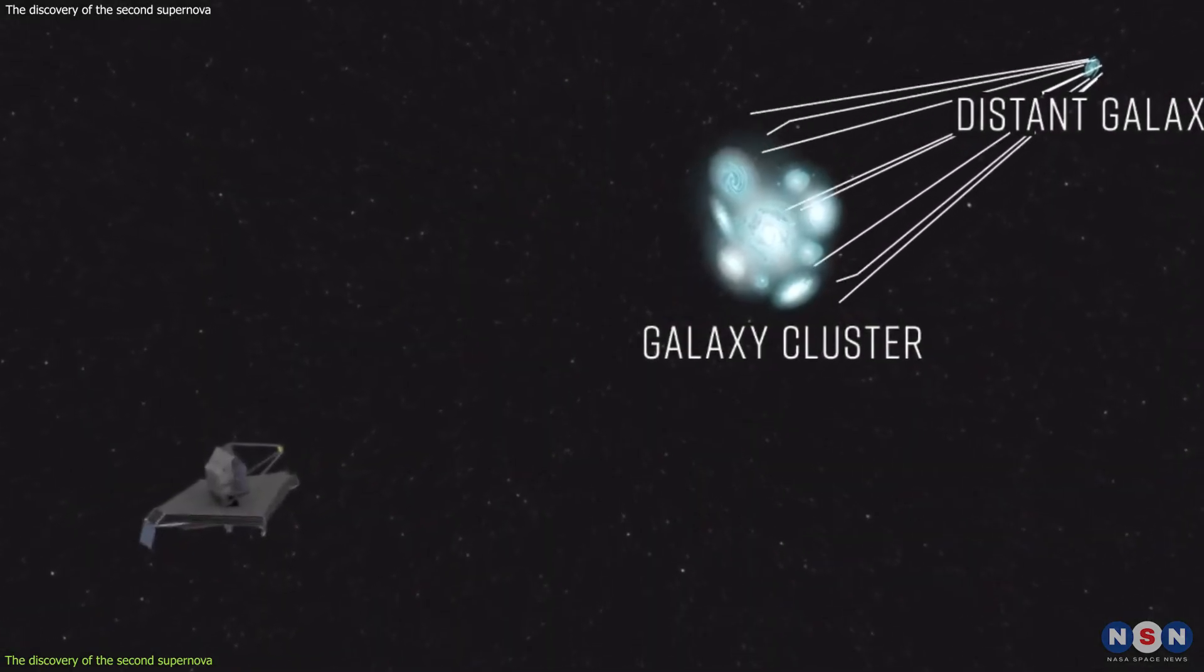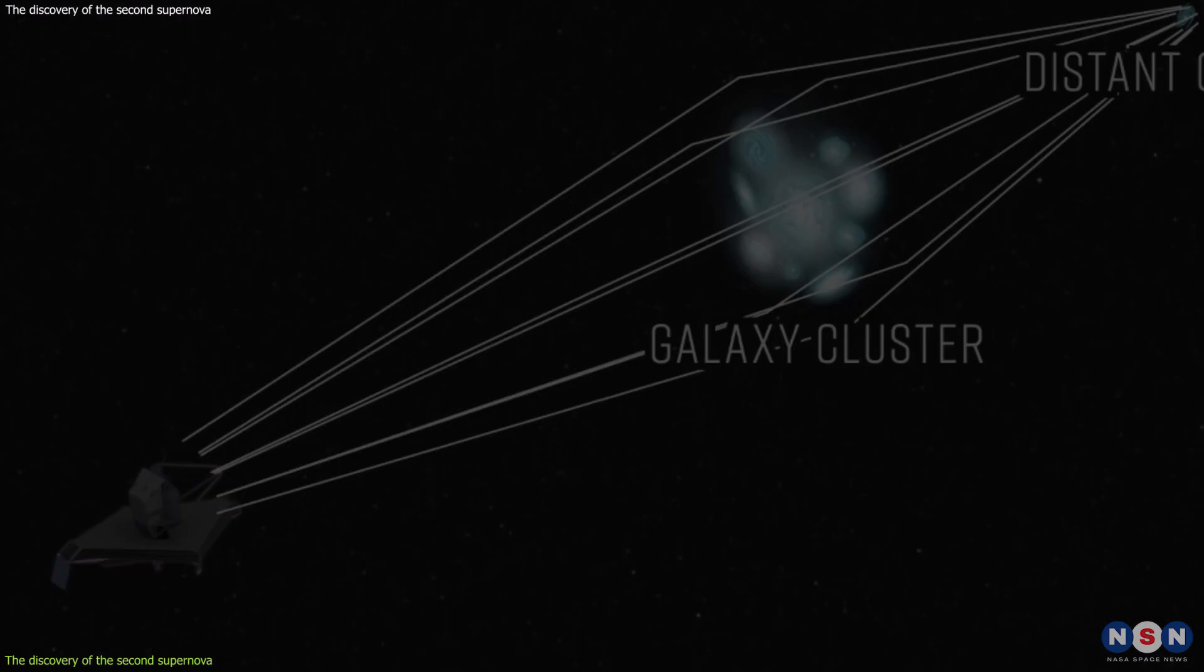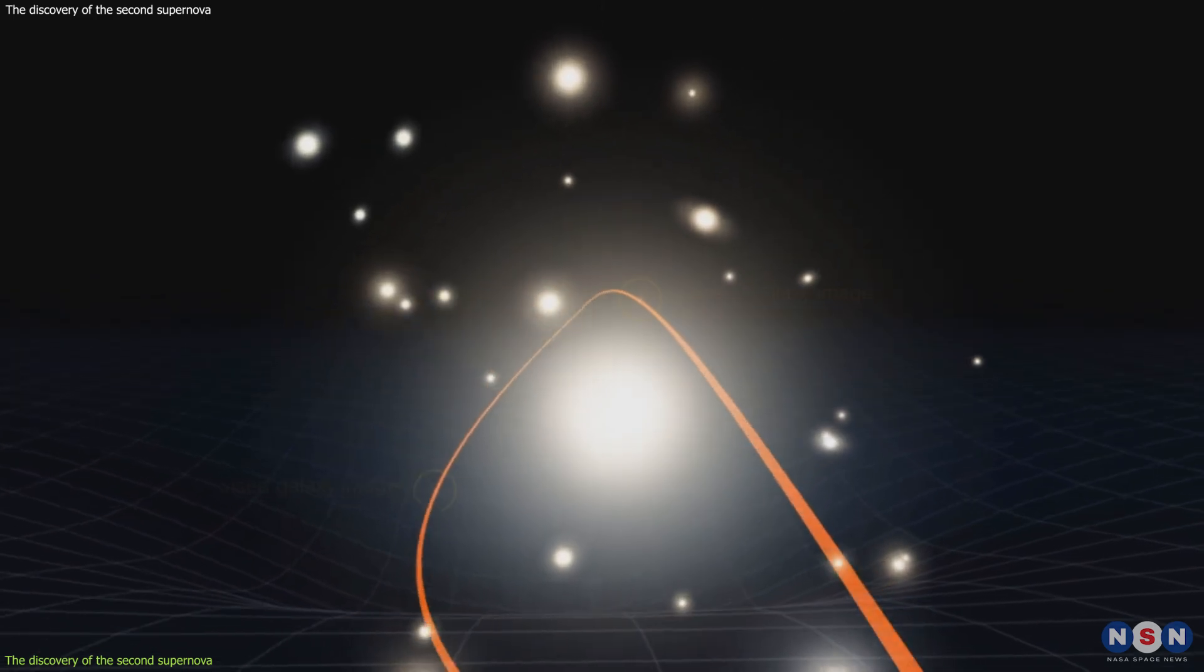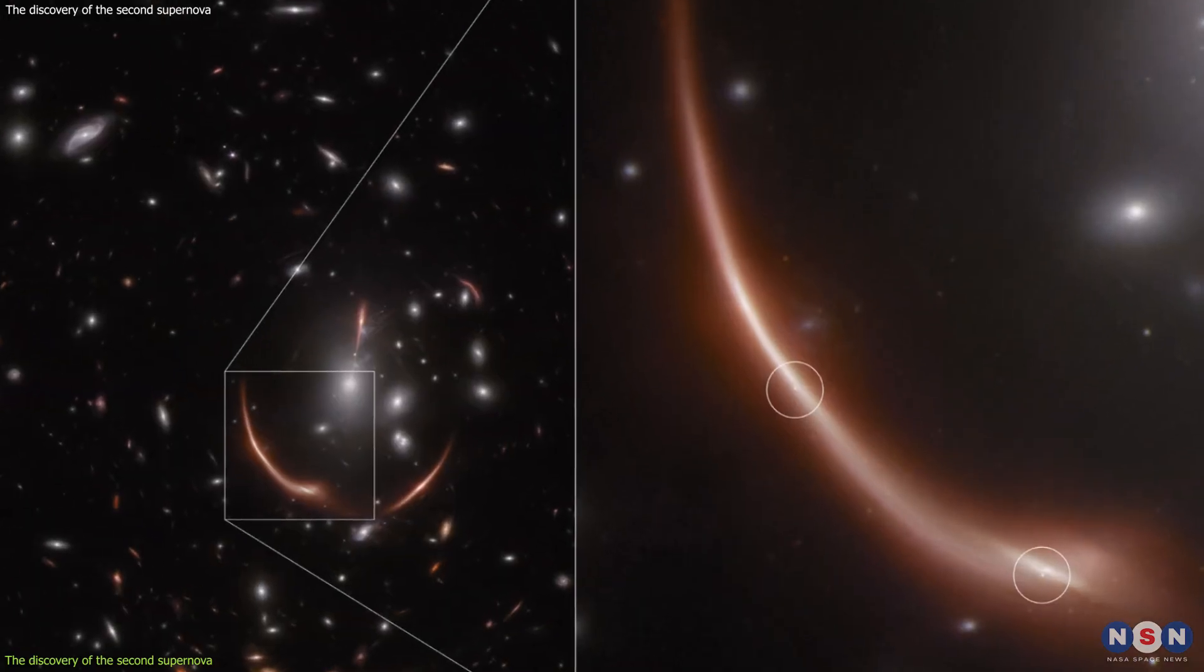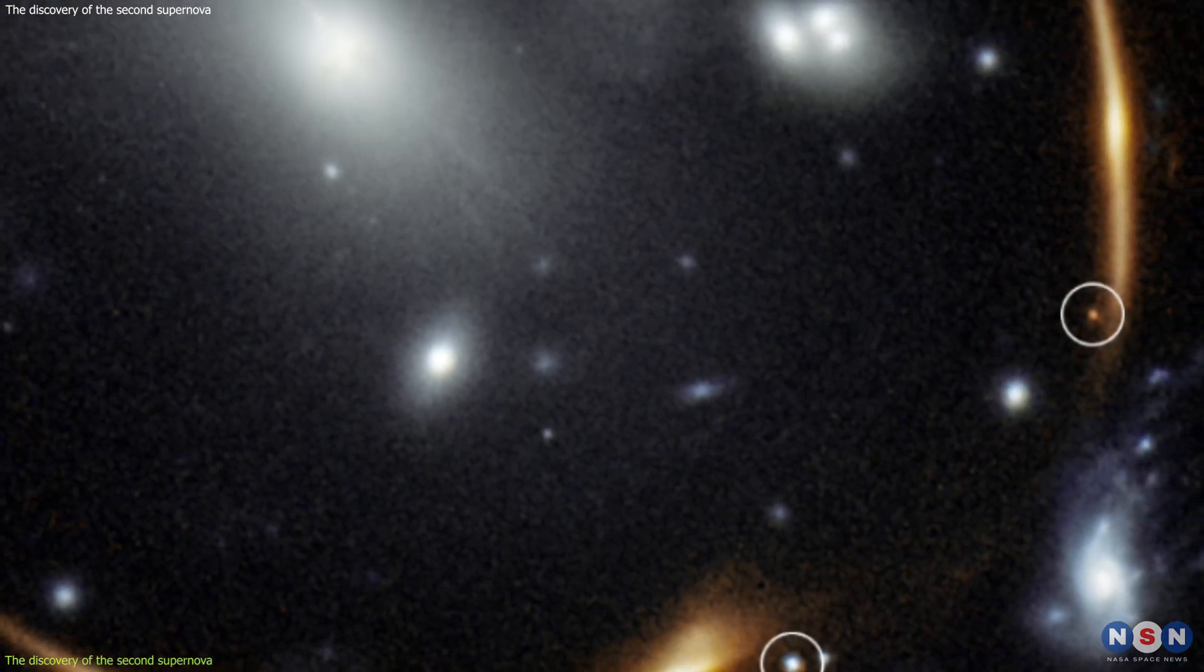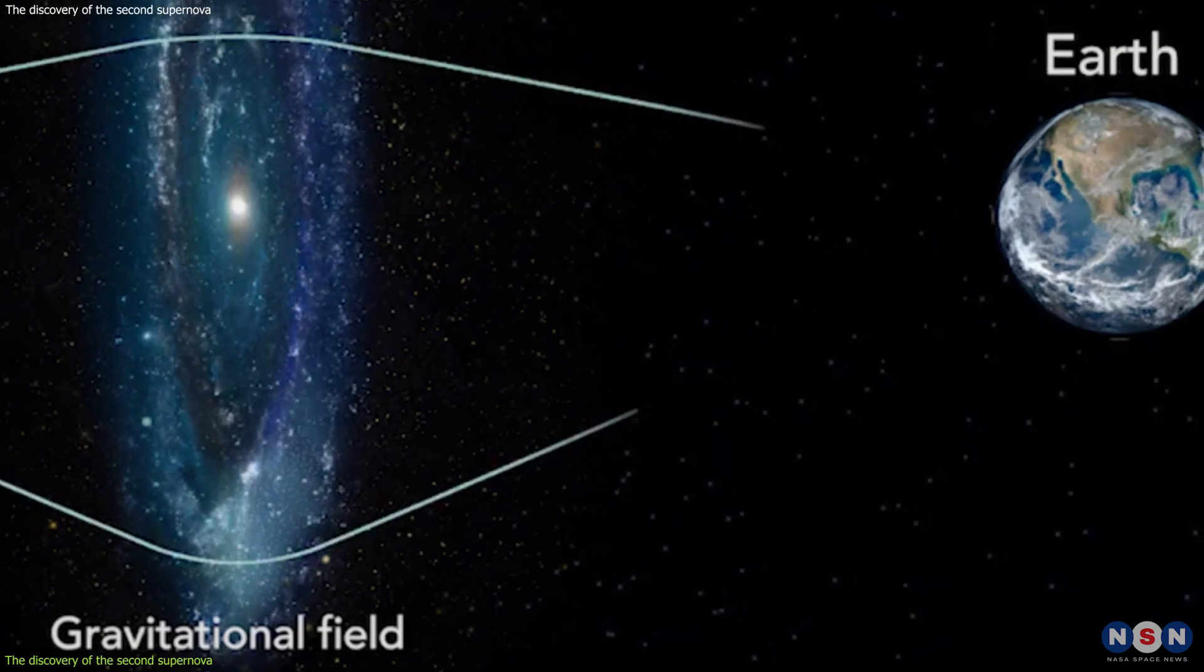Well, remember the time delay that I mentioned earlier? Because of the gravitational lensing effect, the light from different images of the same galaxy can arrive at different times.